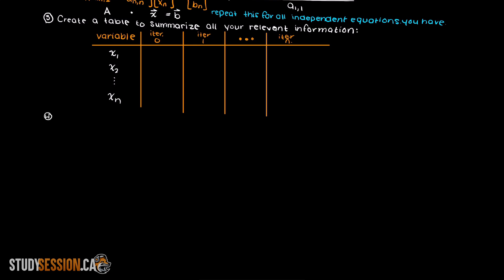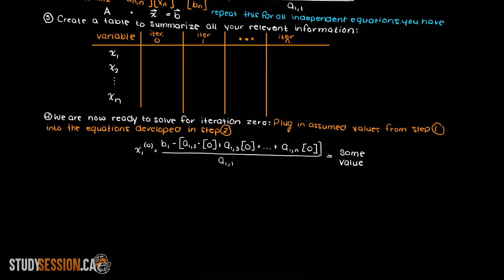Step 4, we are now ready to solve for our iteration 0. We plug in our assumed values into our system of linear equations and these output values are going to be the values used in our next step, or our next iteration.